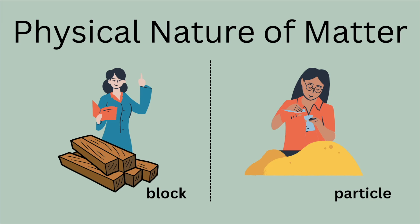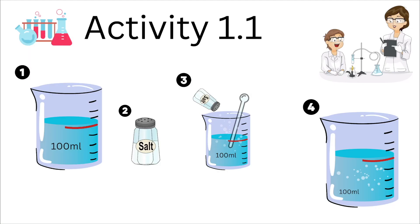We will do a very small activity to come up with a conclusion for ourselves. This is the activity we are going to do. We're going to take a glass beaker, fill it half with water, and make a mark on the water level. Now we are going to add salt into it and stir it well with the glass rod.